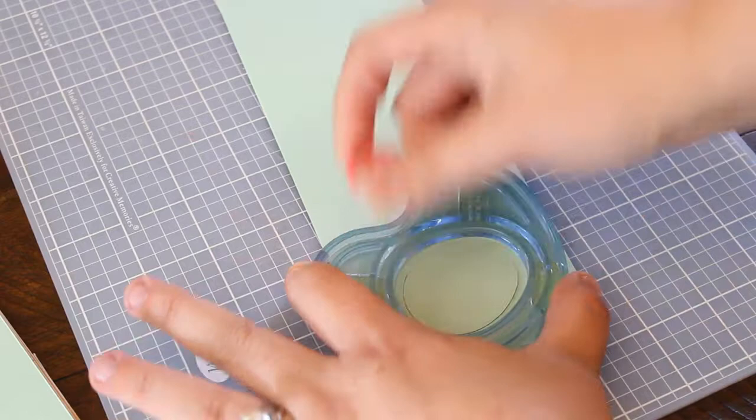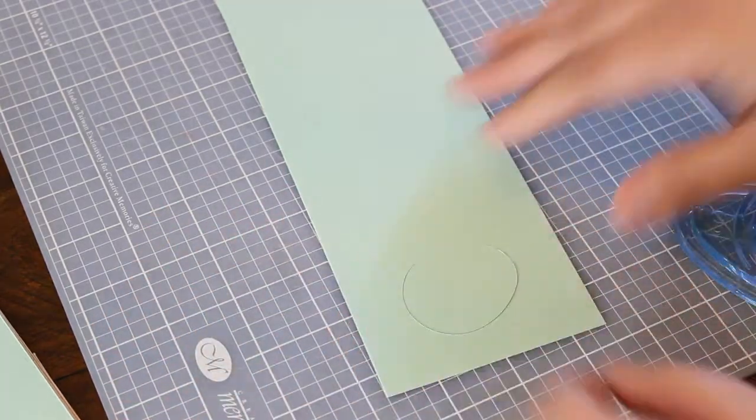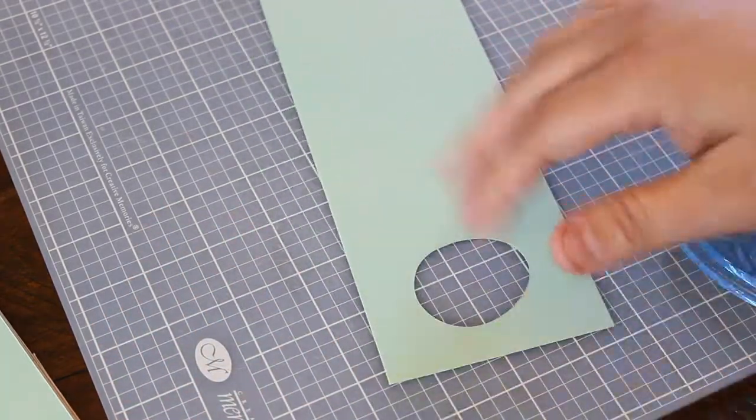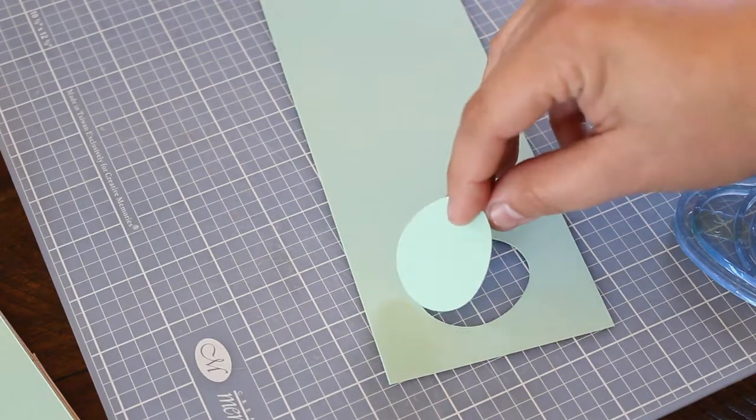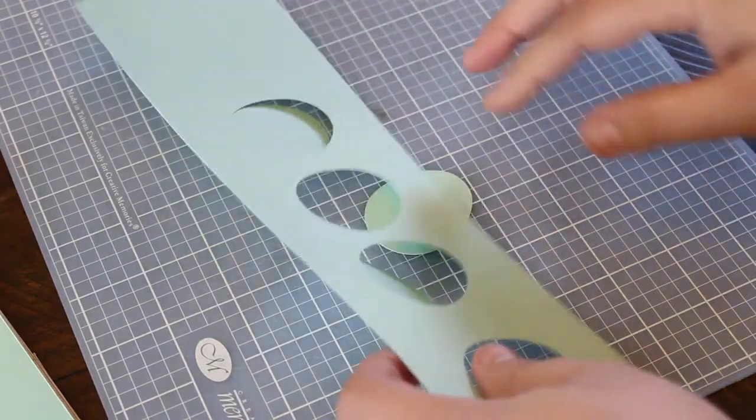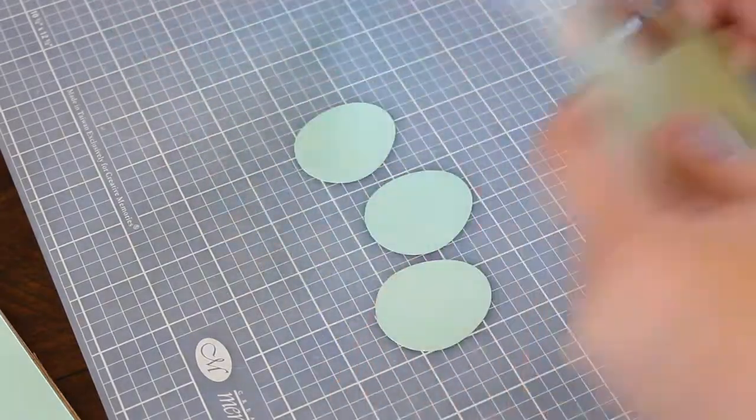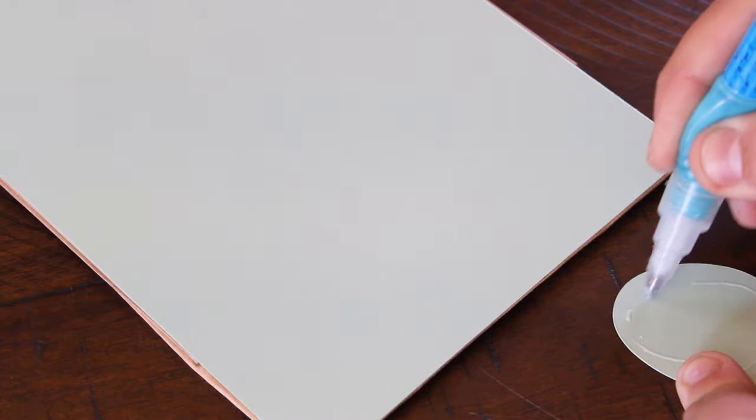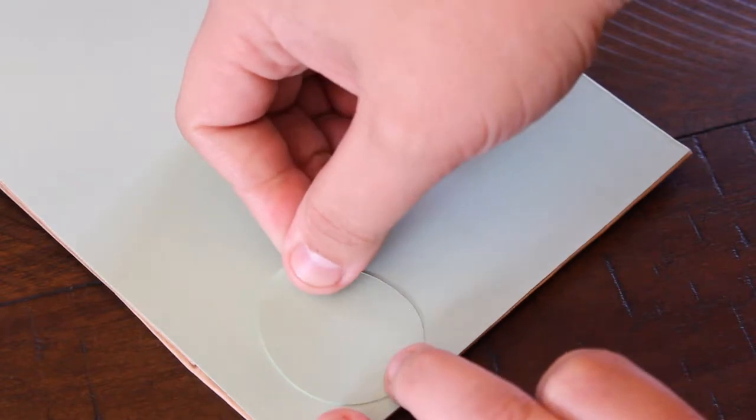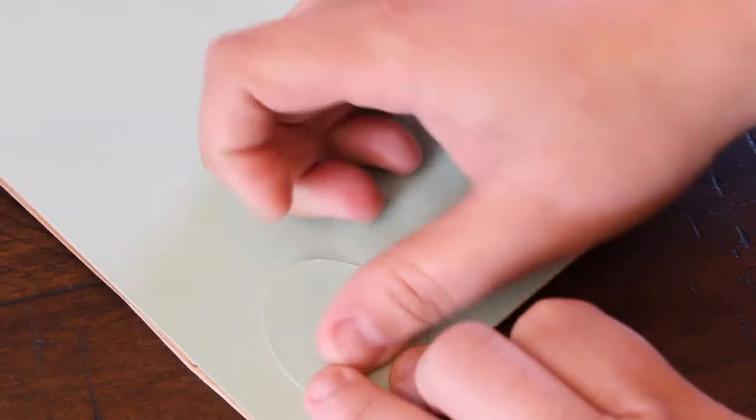For the arms and legs, I have this cutting set from back in the Creative Memories scrapbooking time. I'm pretty sure these came from Michaels and I've had them forever. It's a really cool little cutting set. I just used that to cut out these little shapes for the arms and legs, had four of those total, then just put a little bit of glue on the back of them. I went ahead and put two of these at the bottom for her little feet.